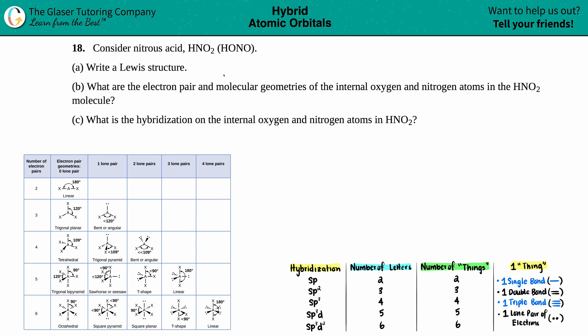Number 18. Consider nitrous acid, which is HNO2, and they give you a hint. It's actually laid out as HONO, so HONO. Anyway, letter A.